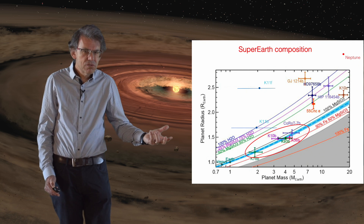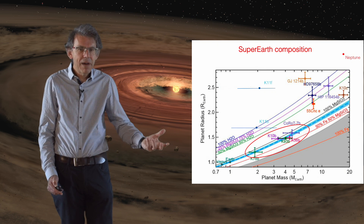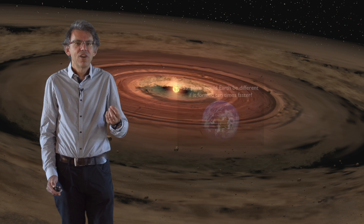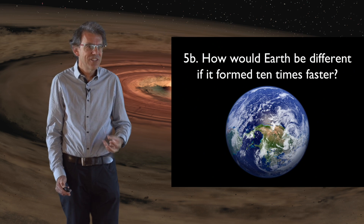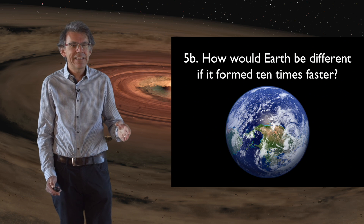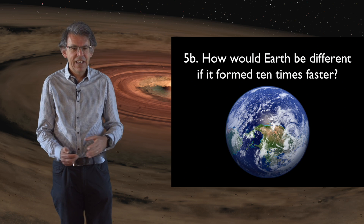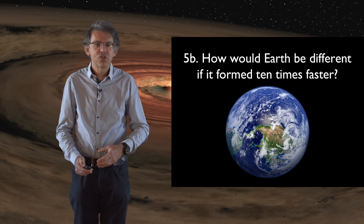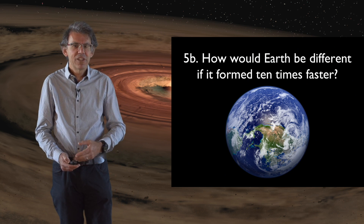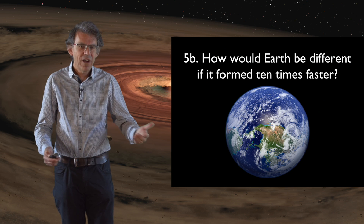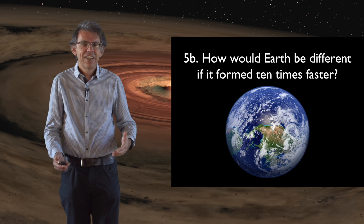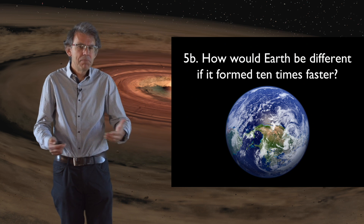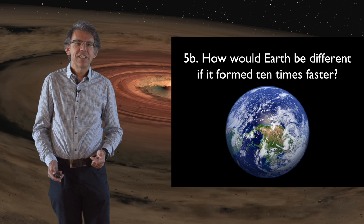These planets are very close to their central star, so presumably they formed in the disk and migrated inward. This leads to a sub-question: how would the Earth look if it had formed much faster than the actual Earth? We know the Earth formed over many tens of millions of years, exceeding the lifetime of the protoplanetary disk. If these Earth-composition super-Earths formed entirely within the disk lifetime, they must have formed 10 to 100 times faster. Understanding how a planet with the same composition as Earth but forming faster would turn out is a big geophysical problem that needs investigation.